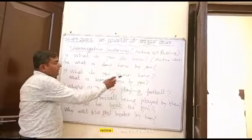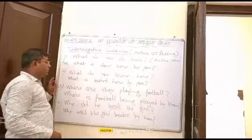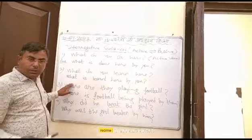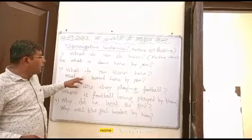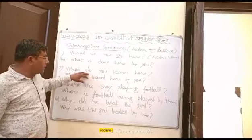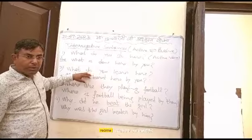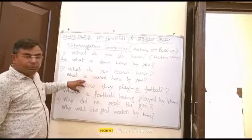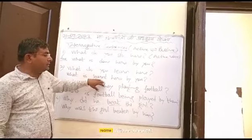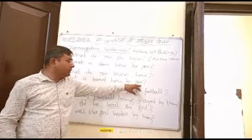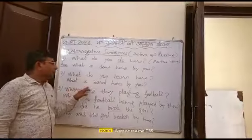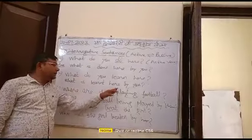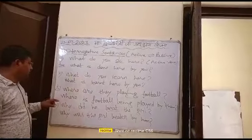What do you learn here? 'What' will remain 'what,' and in place of 'do' we have to put 'is.' So the passive form becomes: 'What is learned here by you?'